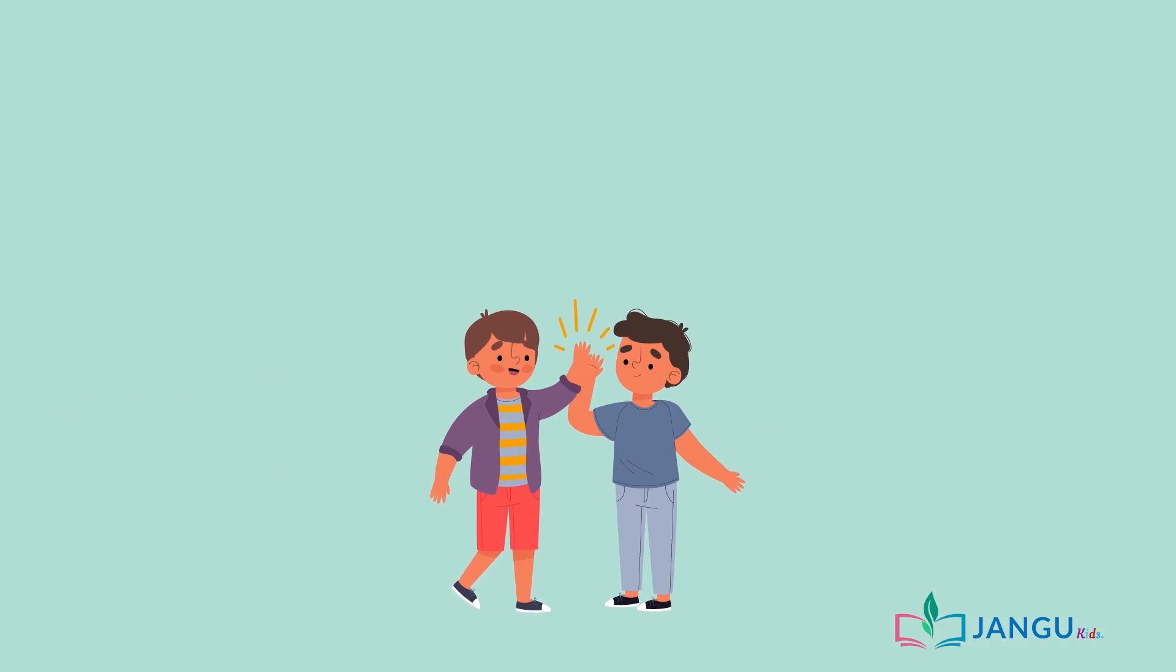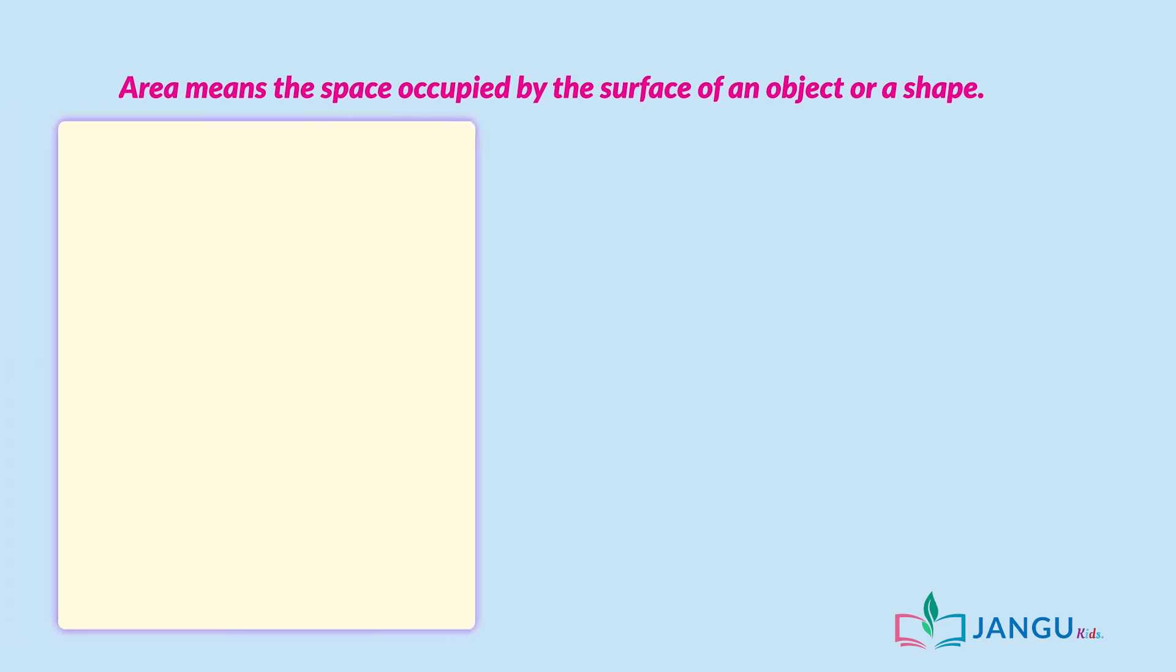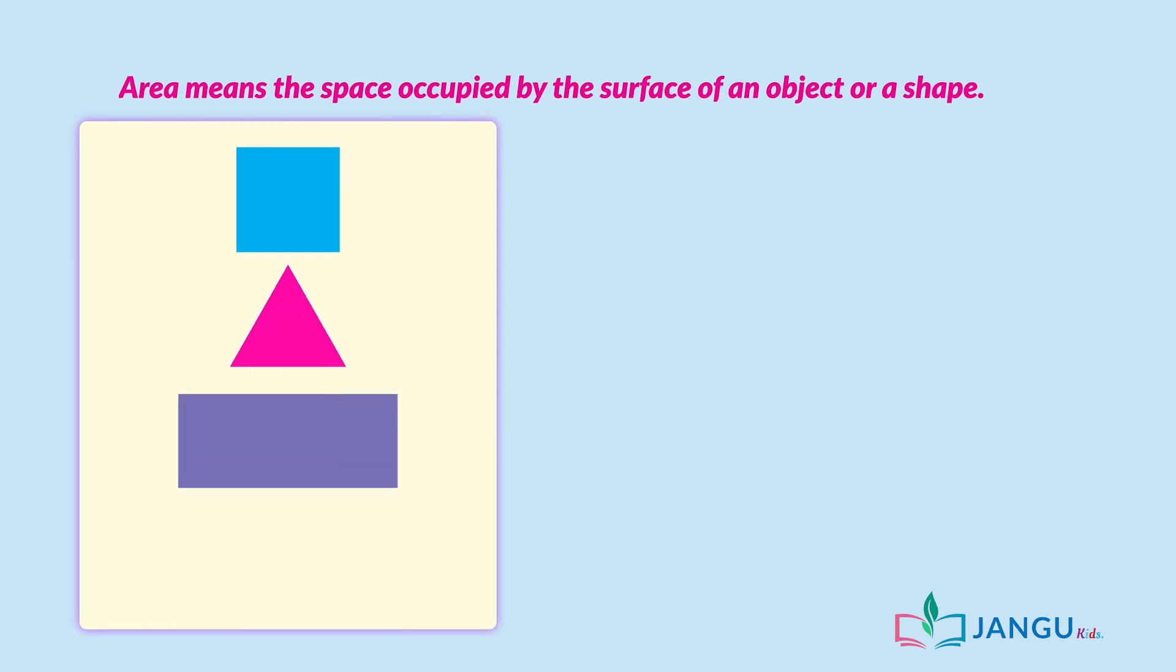And with this, we have come to the end of the lesson on area. Let's quickly review what we have learnt in the lesson. Area means the space occupied by the surface of an object or shape. Examples of shapes are squares, triangles, rectangles, circles, etc.